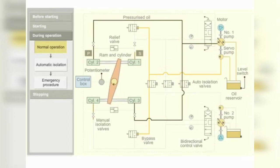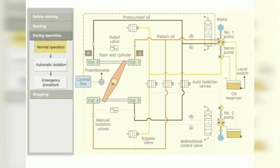The return oil from ram 1 and 4 flows back to the pump return side. When the rudder stock reaches the desired helm angle, the potentiometer sends a signal to the control box. The control box sends a signal to bidirectional control valve. The valve is pushed back to its initial position.